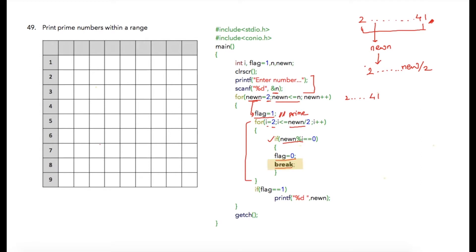In the next iteration, the flag is again reset to 1 and the same process continues. At the end of each iteration, if flag is still 1, it means none of the numbers were able to divide newn, so that number is prime and we simply print it.